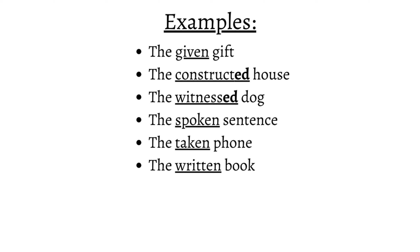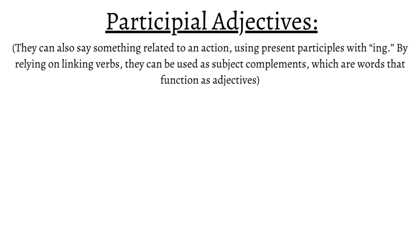Ultimately, participial adjectives describe the condition of something, and across the examples, they demonstrate exactly that. But they can also say something related to an action using a different form with "-ing". Up until now, some examples used "-ed" while others were irregular, but participial adjectives can also be created from present participles. By relying on linking verbs, they can be used as subject complements, which are words that function as adjectives.